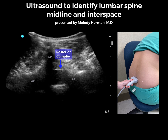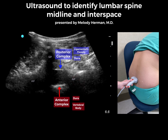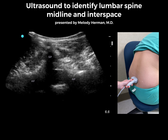Here we see the posterior complex, which comprises the ligamentum flavum and dura, the anterior complex, which is made up of the dura and vertebral body, and the intrathecal space in between. From this image, we've identified midline and the depth to the epidural and intrathecal spaces.